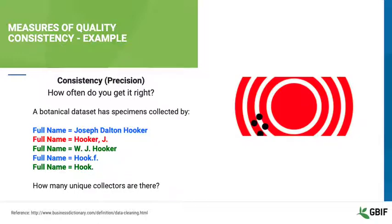In blue, Joseph Dalton Hooker and Hook F are the same person — Hook F is the abbreviation used for Joseph Dalton Hooker. In green, W.J. Hooker and Hook are the same person — Hook is the abbreviation for William Jackson Hooker. William was actually Joseph's father. Finally, in red, there is Hooker J. This entry could be an error or typo of either Joseph or William Hooker, or it could be a third person with a similar name. Thus, more research would be needed to clarify these data.